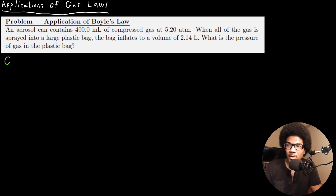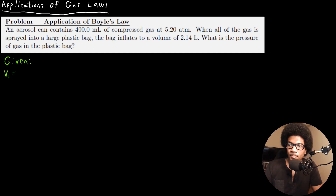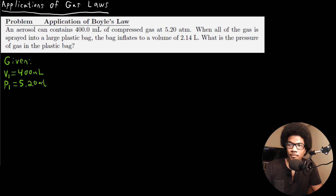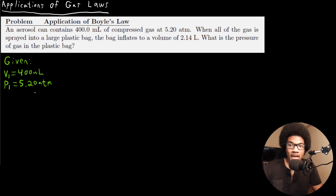Let's track out our givens. We were given the initial pressure and volume: V1 is equal to 400 milliliters, and P1, the initial pressure, is equal to 5.20 atm. As for the conditions once the bag inflates, we've been given the final volume: V2 is equal to 2.14 liters.